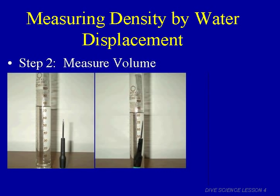Next, measure its volume using a graduated cylinder with water. Make sure the water level is higher than the object so it submerges completely, and note the initial water level — about 76 milliliters. Then put the screwdriver in the cylinder and note the new water level. The water went up to 84 milliliters, a change of 8 milliliters. That 8 milliliters is the volume of the screwdriver.